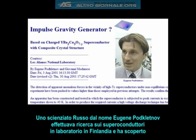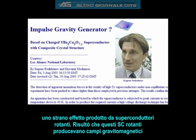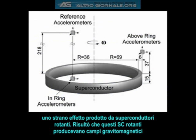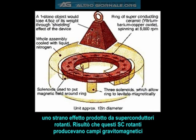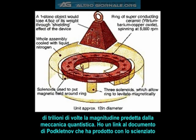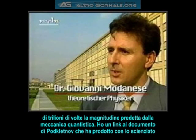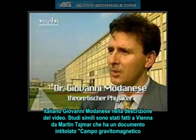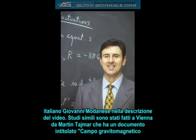A Russian scientist by the name of Eugene Podkletnov was doing superconductor research in a laboratory in Finland when he discovered a strange effect produced by rotating superconductors. It turns out that these rotating superconductors produced gravitomagnetic fields that were trillions of orders of magnitude larger than were previously predicted by quantum mechanics. I have a link to the Podkletnov paper, which he co-authored with Italian physicist Giovanni Modanese, in the description.